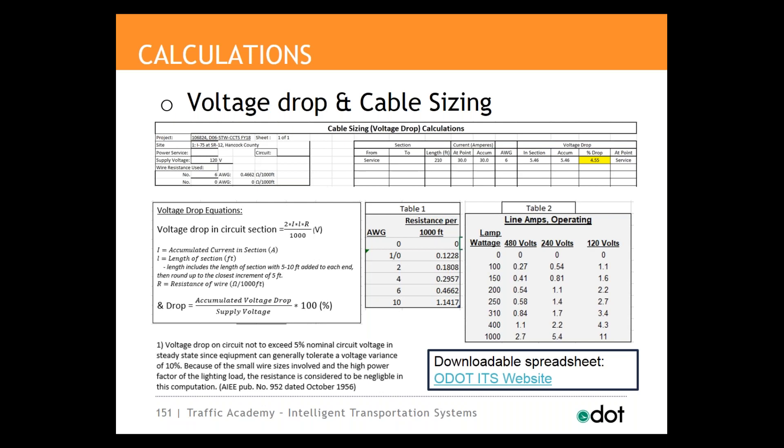ODOT has a voltage drop calculation spreadsheet that should be used to determine the wire sizes. The spreadsheet can be found on the Office of Traffic Operations website. ODOT prefers not to utilize cable sizes greater than 1 AWG, and they will allow voltage drops up to 5%. In the example on the screen, the calculations have determined that the voltage drop will be 4.55% when using a number 6 AWG cable, so a number 6 AWG cable would be used. If you drop down to a 10 AWG cable, your voltage drop would exceed 5%, or you could use a 4 AWG cable to lower the voltage drop percentage, but you'd be paying for a larger cable when it's not necessary.